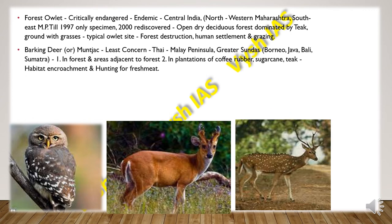Then we have the Barking Deer, or Muntjac. Its status is least concerned. They are found in Thailand, the Malaysian Peninsula and greater Sundas including Borneo, Java, Bali and Sumatra. They live in forest areas and adjacent areas to the forest, including plantations of coffee, rubber, sugarcane and teak. They mainly face threats from habitat encroachment and hunting for their meat.